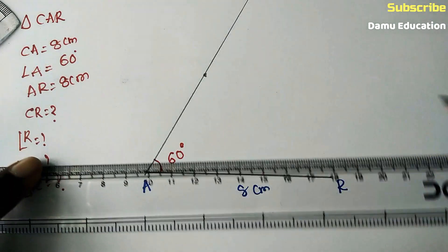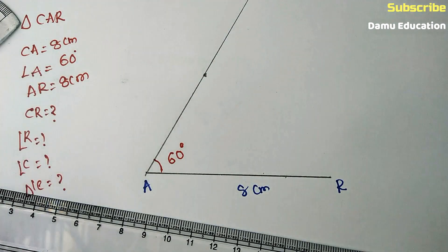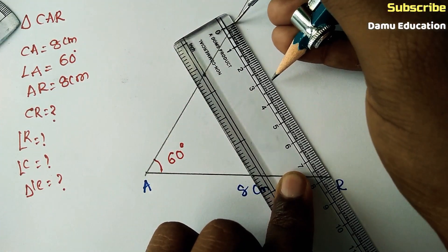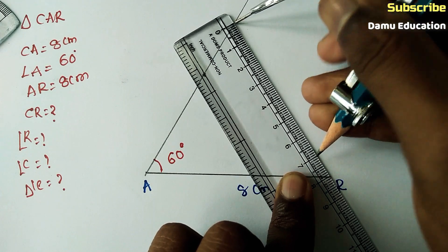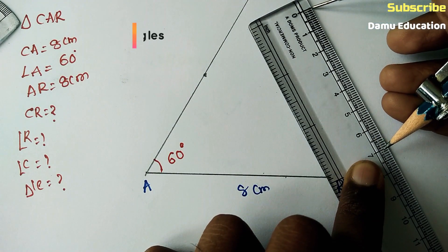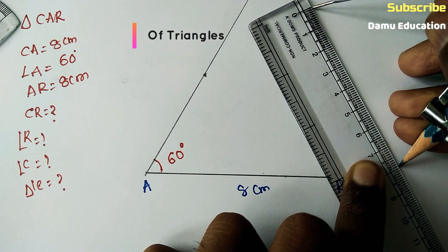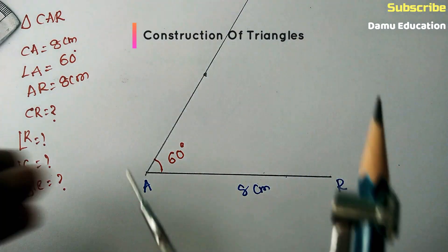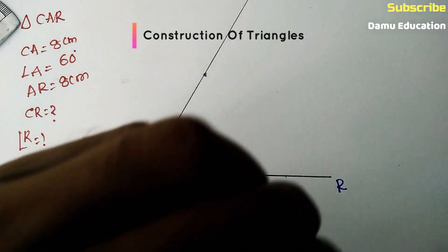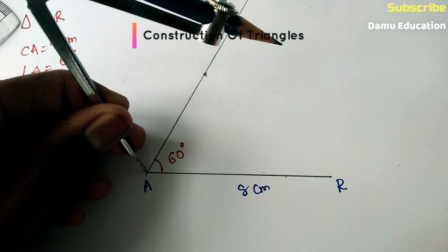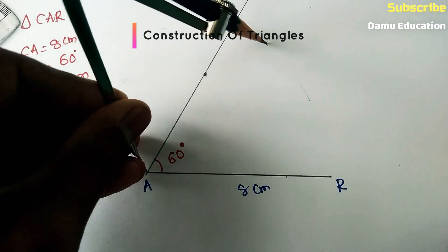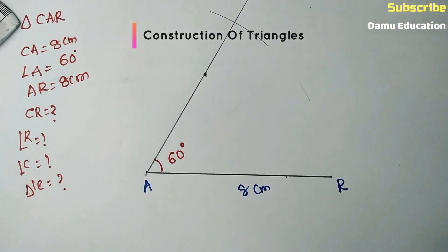So we have drawn one ray from A at 60 degrees. Next, CA is also equal to 8 centimeters. Set the compass needle at 0 and open it to 8 centimeters. This gives a length of 8 centimeters. Place the center of the compass at A and draw one arc that will intersect the ray at some point.